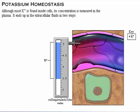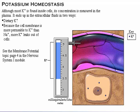Although most potassium is found inside cells, its concentration is measured in the plasma. It ends up in the extracellular fluids in two ways. Like water and sodium, potassium is constantly entering the body in food and leaving the body mostly through the urine. Because the cell membrane is more permeable to potassium than sodium, more potassium leaks out of cells.